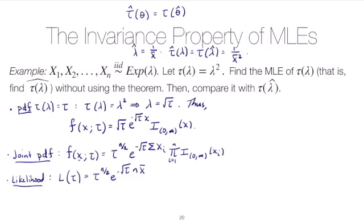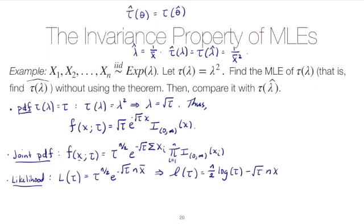We typically maximize the log of the likelihood function. The log-likelihood ℓ(τ) is n/2 times log(τ), and then the log of e raised to the exponent just gives us that exponent, which is negative. So we have minus √τ times n times x̄.